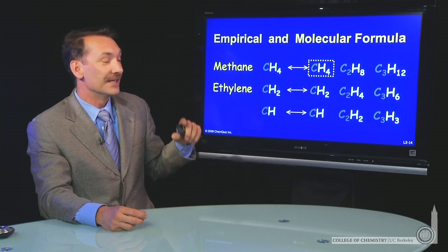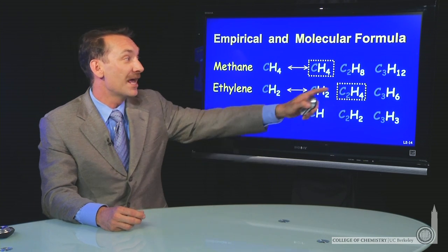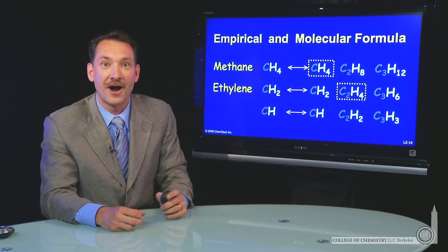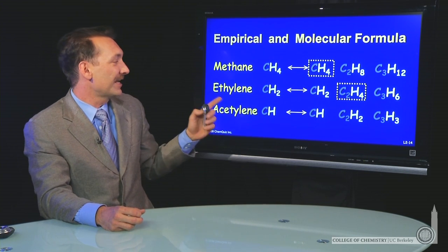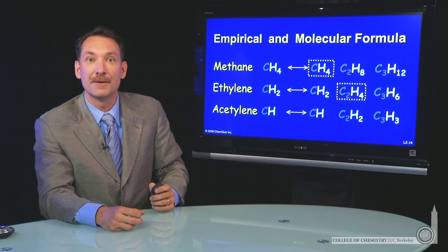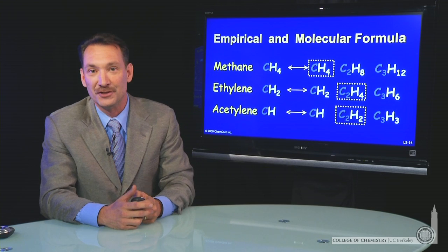For ethylene, the simplest empirical formula is CH2, but ethylene molecules are C2H4, twice the molar mass. Acetylene CH is the empirical formula, but the actual molecule C2H2.